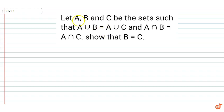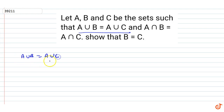In this question, we have to let A, B, C be sets such that A union B is equal to A union C, and the other condition is that A intersection B is equal to A intersection C.